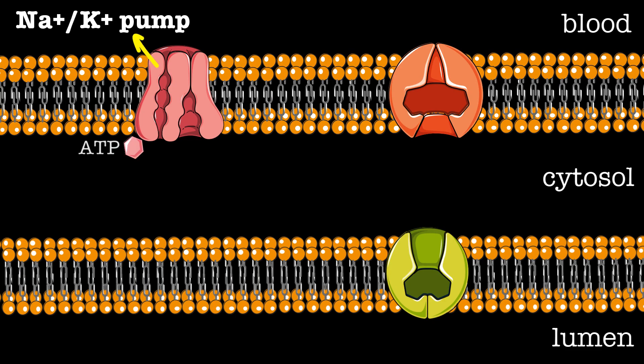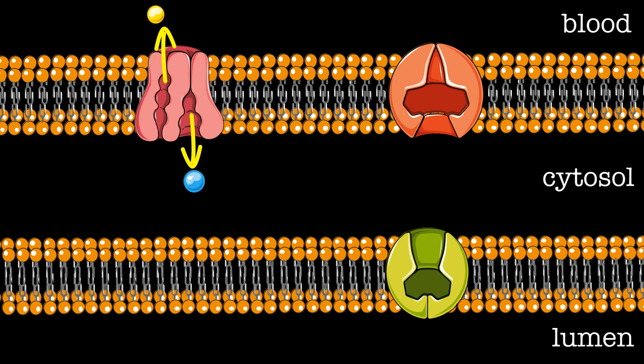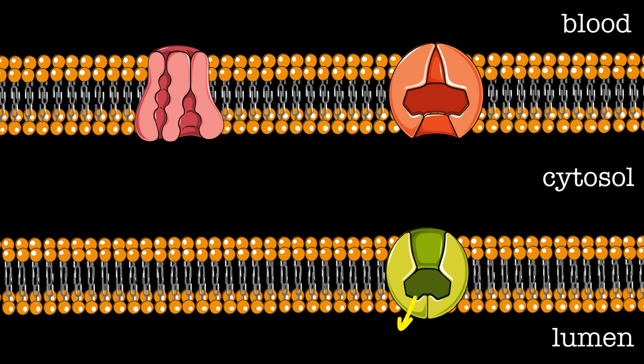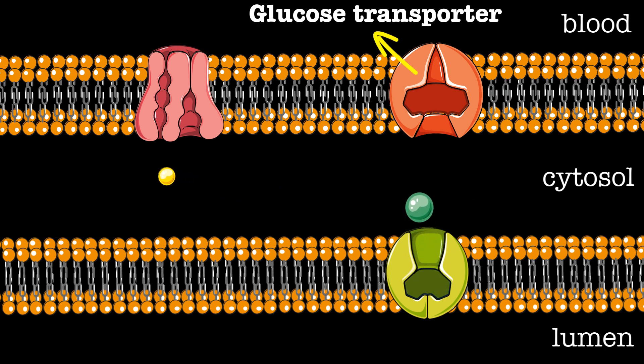Secondary active transport uses the ion gradient generated by the sodium-potassium pump to drive the movement of a secondary molecule. Sodium-glucose transport in the proximal tubular cell is an example of secondary active transport. Sodium-glucose co-transporter uses the energy in the downhill movement of sodium to transport glucose across the membrane against the glucose gradient so that the sugar can be transported into the bloodstream.